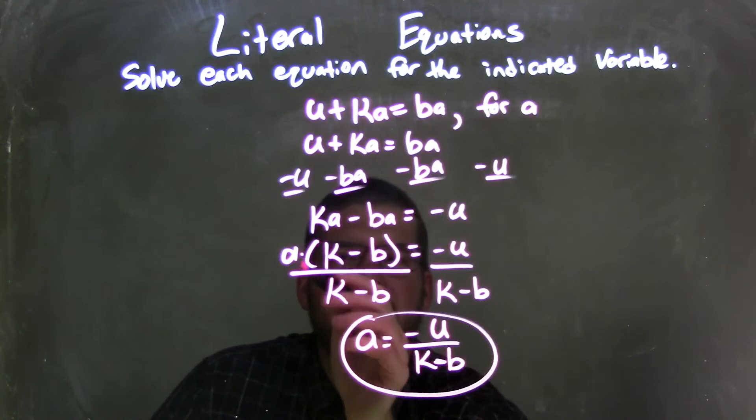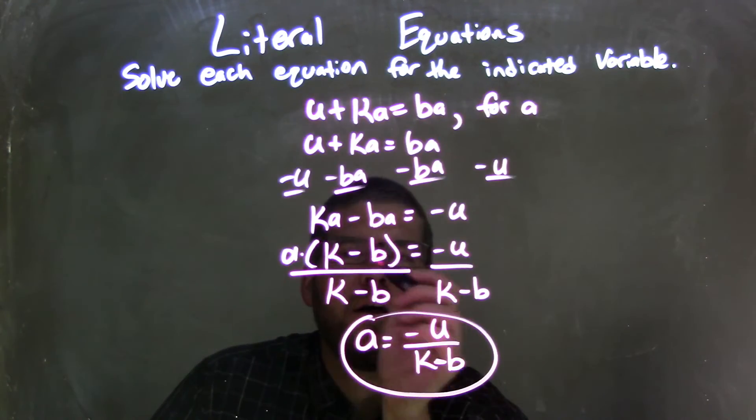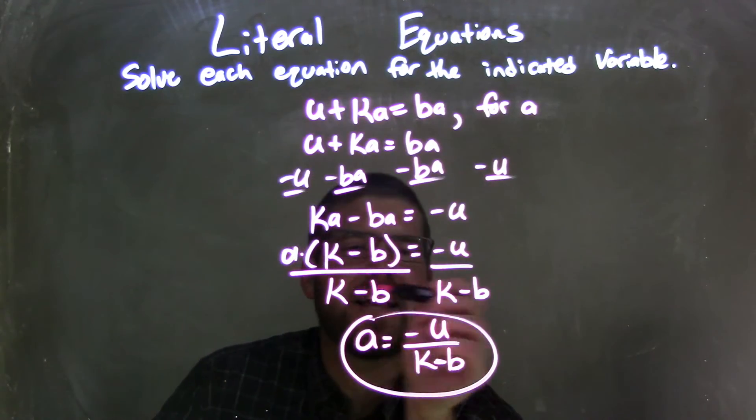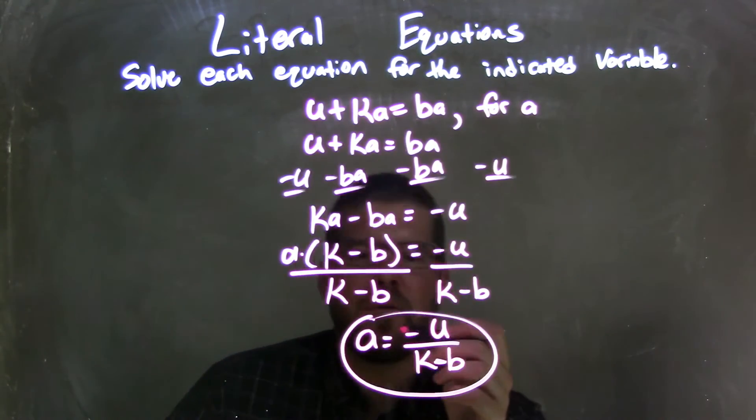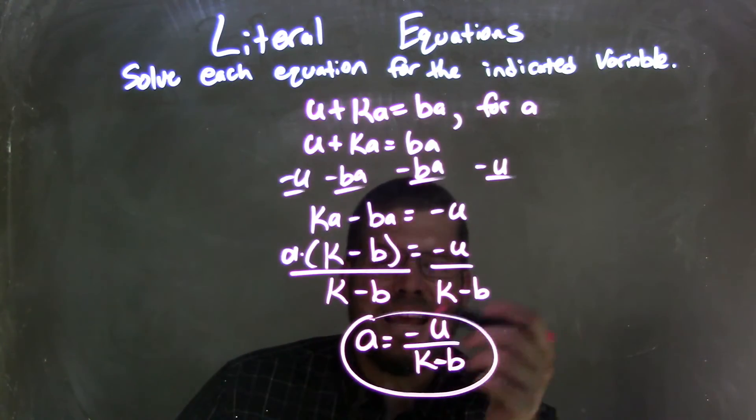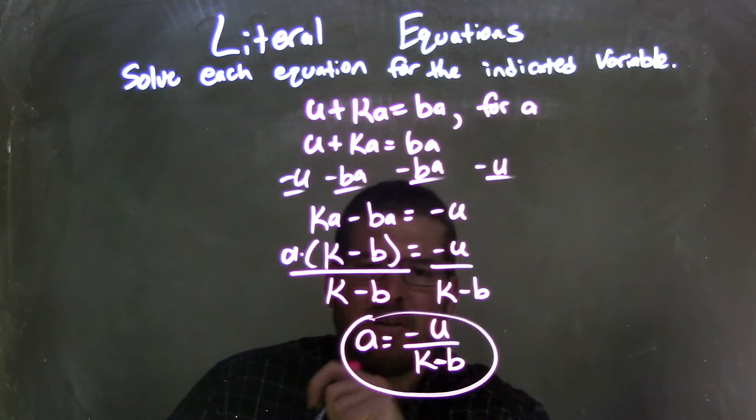So I have a by itself on the left, and that's equal to k minus b, or sorry, a times k minus b in parentheses equals a negative u. And then I divided by k minus b to both sides, leaving it with a isolated by itself and equal to negative u over k minus b, and that is our final answer.